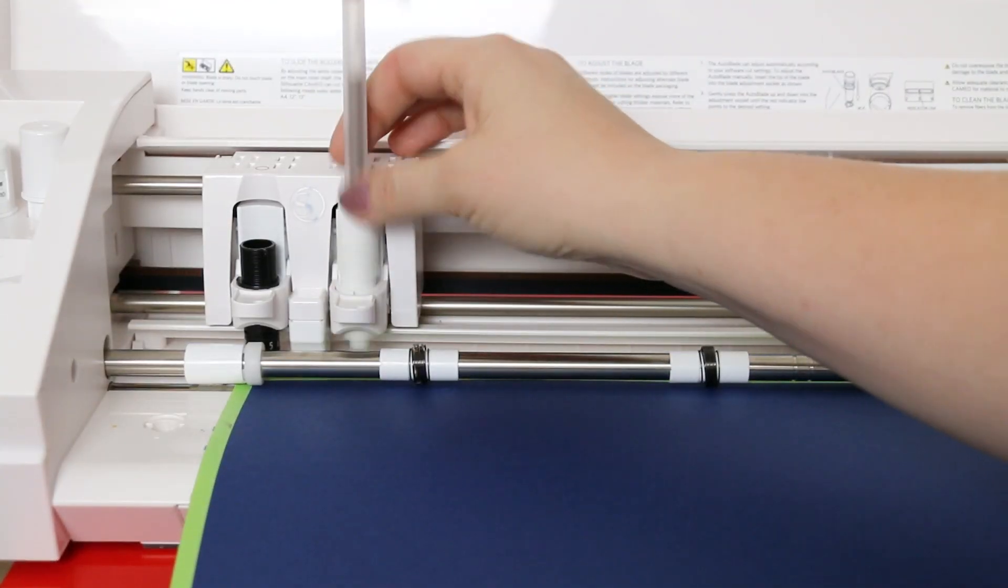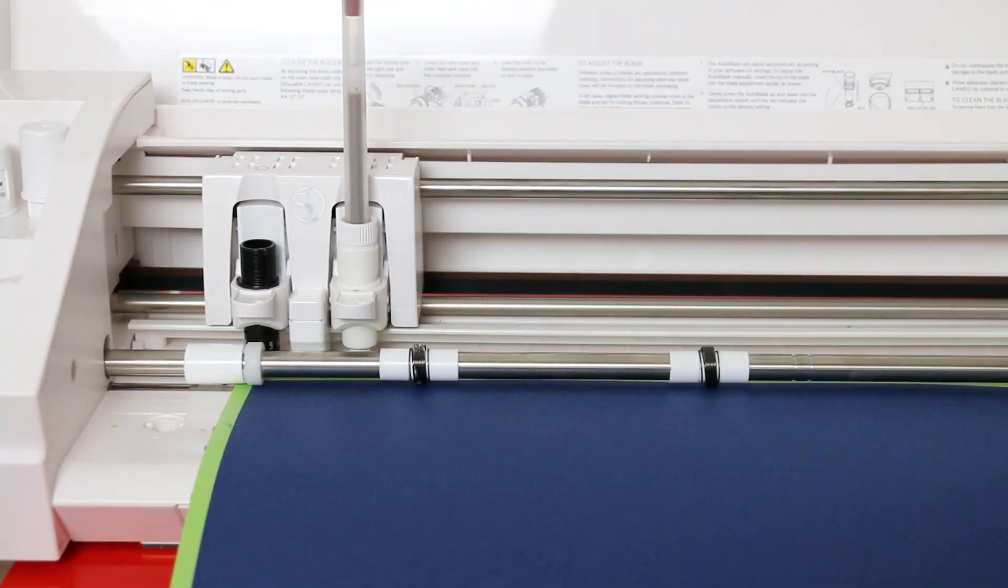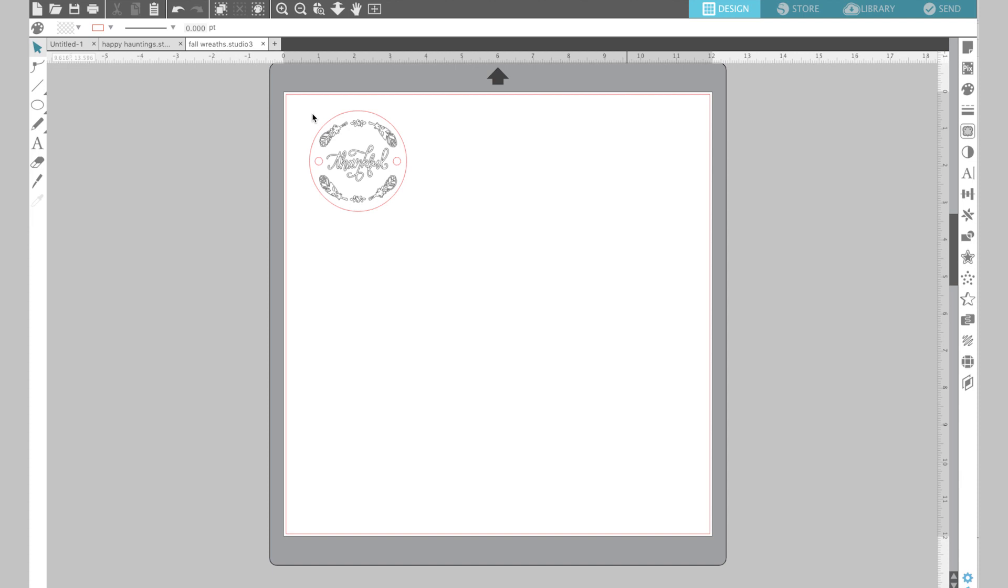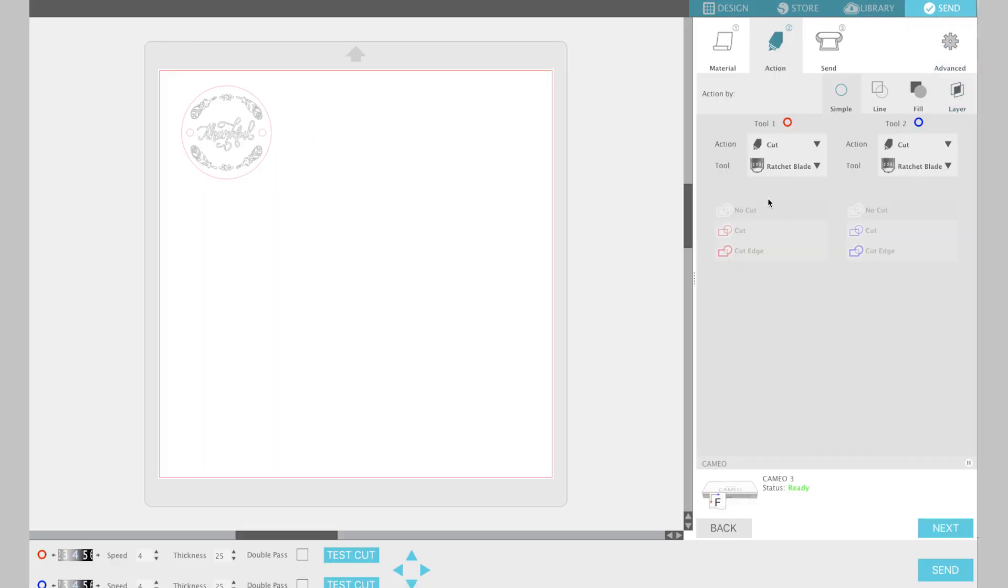Just insert it into the tool holder and lock it in place. I have a design here for some tags that I want to sketch and cut at the same time. So I'm going to go to the send menu and then choose the design, the text that I want to be sketched, and I have my pen in the second tool in the blue slot.